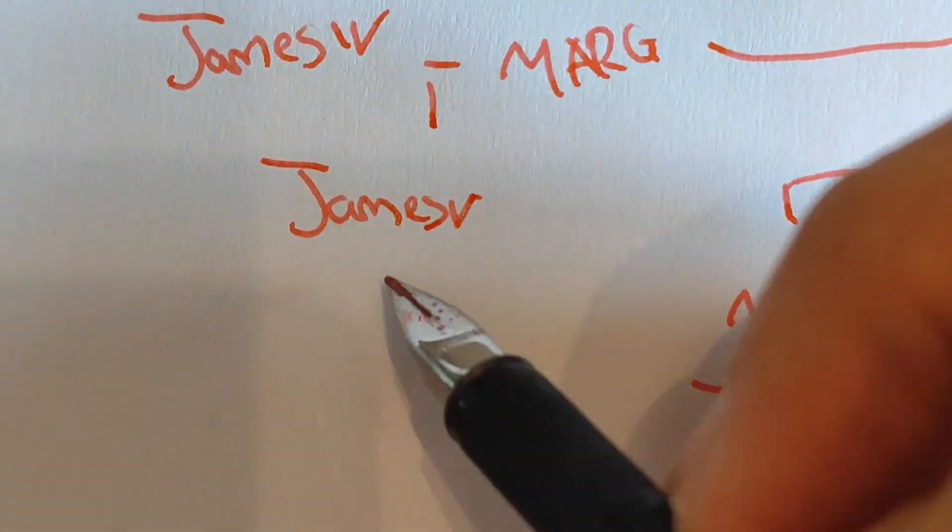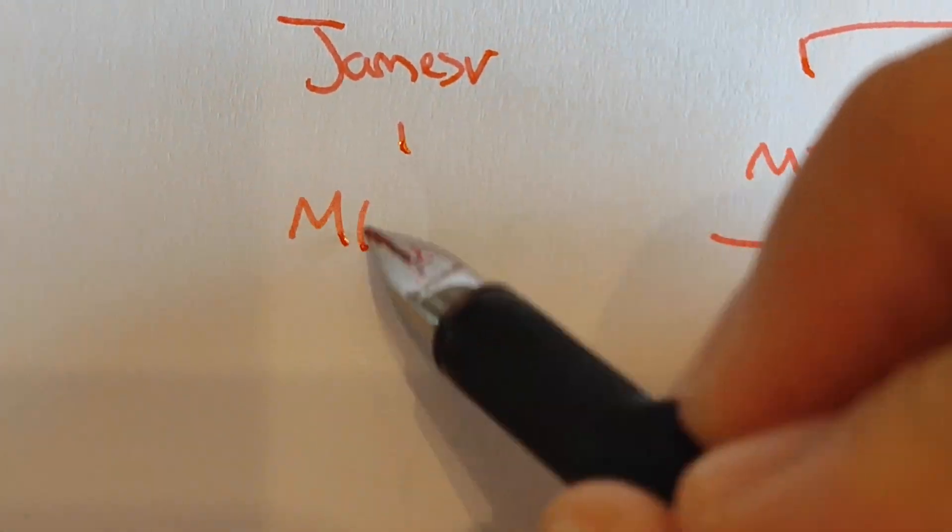Mary, Queen of Scots, who was beheaded by Elizabeth, who had another son called James VI of Scotland.